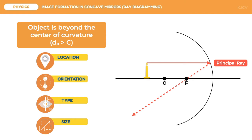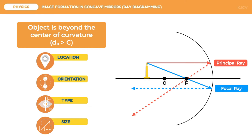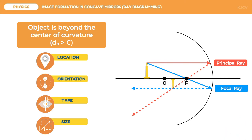The first ray is a principal ray — incident from the object to the mirror parallel to the principal axis. After hitting the mirror, it reflects away passing through the focus. The second ray is the focal ray — incident to the mirror passing from the object through the focus. After hitting the mirror, it reflects away parallel to the principal axis. These are our two required rays. The optional third ray is the central ray, incident to the mirror passing from the object through the center of curvature. After hitting the mirror, it reflects back to the center of curvature.